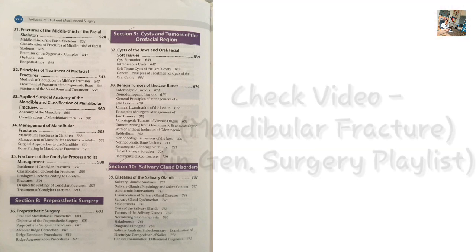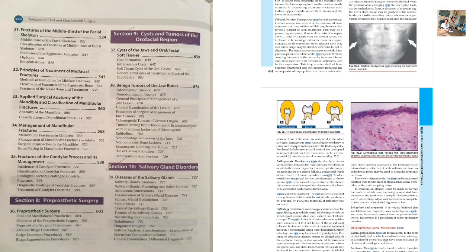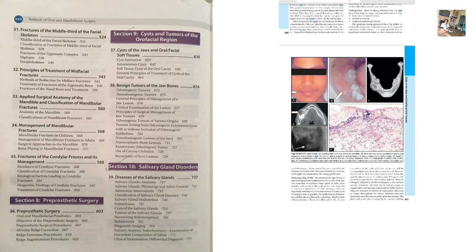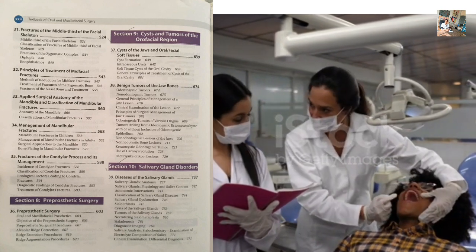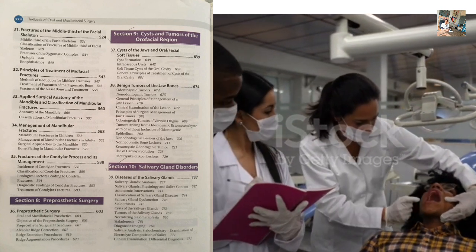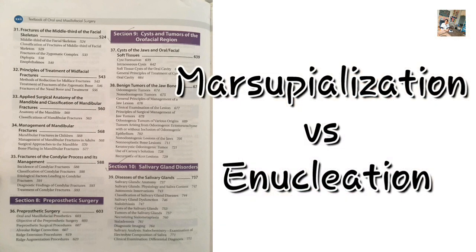Section 9: Cysts and tumors of the orofacial region. First, the classification of cysts of the jaw — odontogenic epithelial origin. Primordial cyst is important, then dentigerous cyst — circumferential, lateral, coronal. Very important from this chapter: general principles of treatment of cysts of the oral cavity. For a particular cyst, treatment may involve marsupialization or enucleation. These two differences are also asked — either as a short note in the paper or in the viva.